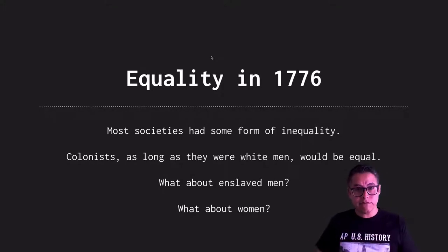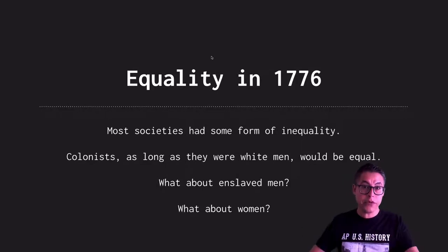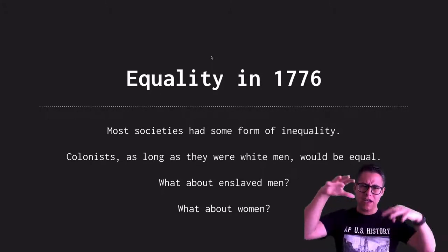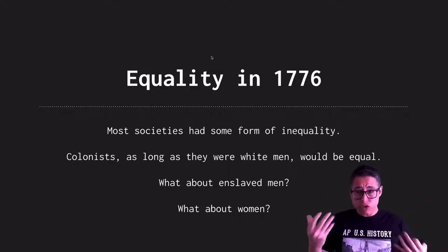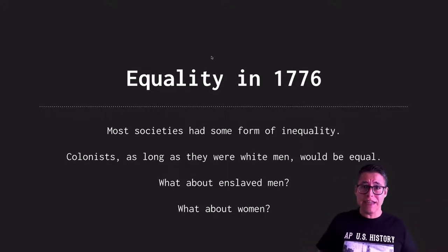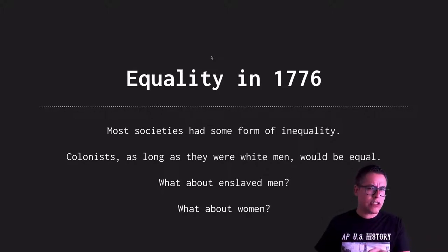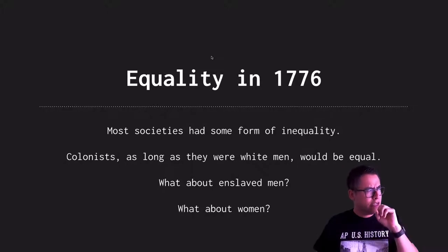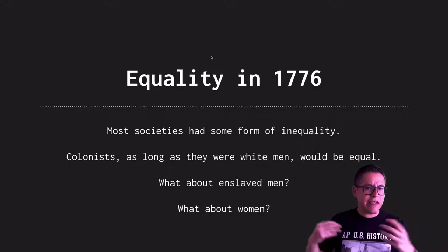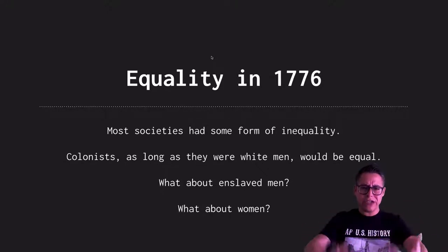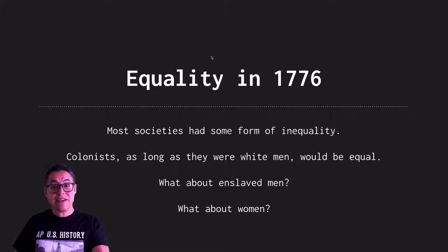Jefferson already understood that most colonists — being white, property-owning men — enjoyed some kind of equality, though even within that group there was unequal status based on how much land you owned. But this didn't include anybody who was enslaved. Questions that even framers were asking themselves back then were: what about enslaved people — are they included? And what about women? Are they going to be included in this new nation? That's equality in 1776.